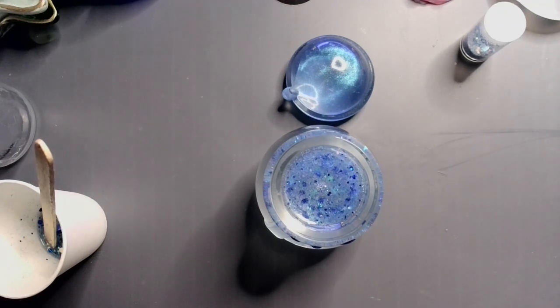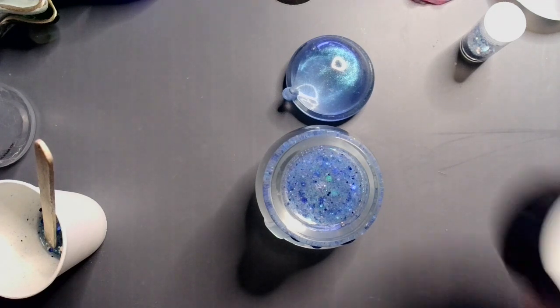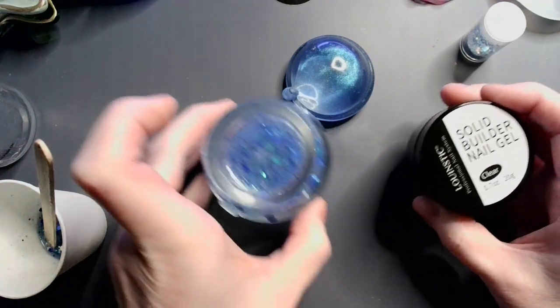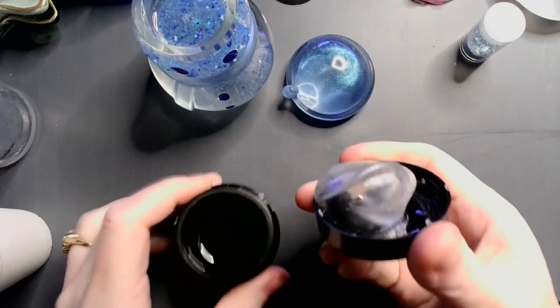Now, that being said, what I am going to use to seal up the top is Solid Builder Nail Gel. Basically, what this is, is it's just one, hard to open, two, it's literally gel UV resin. So, it's just really thick UV resin.